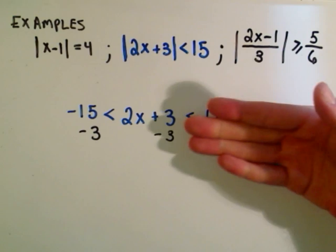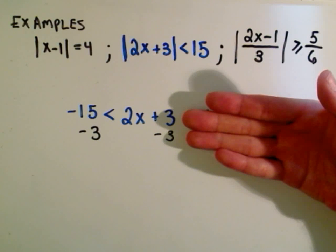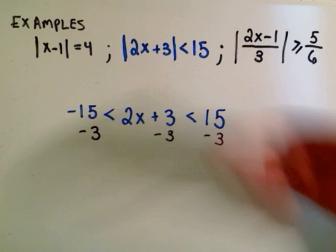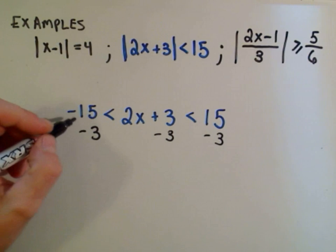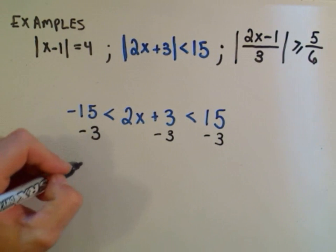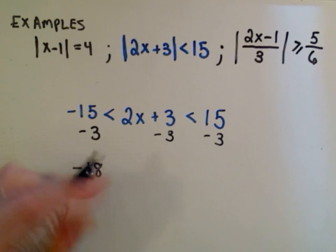Imagine if you had the inequality negative 15 less than 2x plus 3, we would be solving it by subtracting 3 from both sides. So we're just doing two steps at once. Negative 15 minus 3, that's simply negative 18.